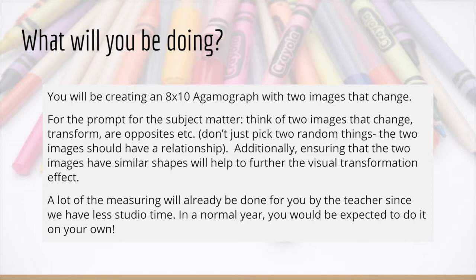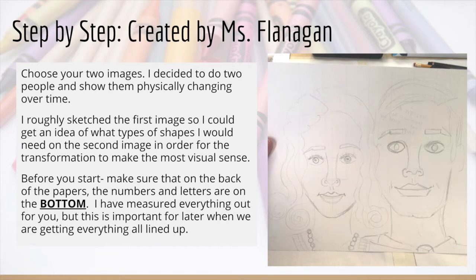So step by step — this was created by our amazing Miss Flanagan. You're going to choose two images. She decided to do two people, showing how they physically change over time. She sketched the first image so she could get an idea of what types of shapes she would need to do the second image in order to transform and make sure it makes visual sense.